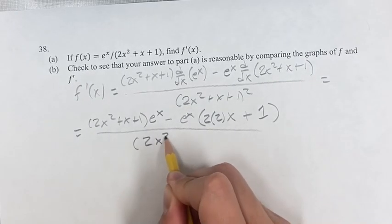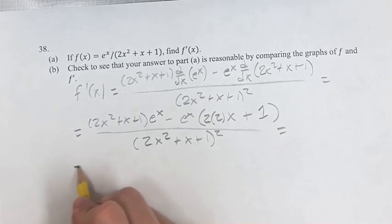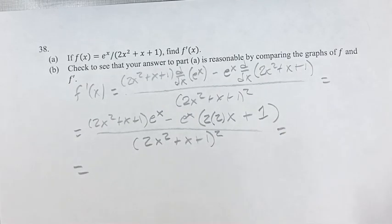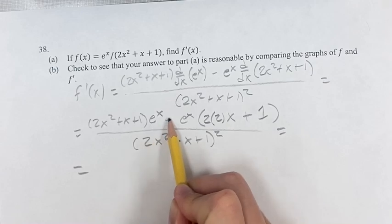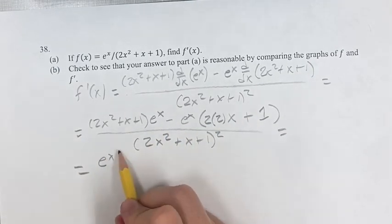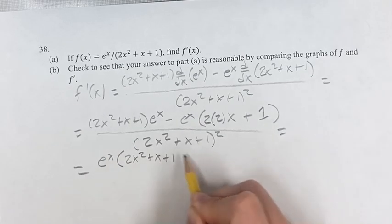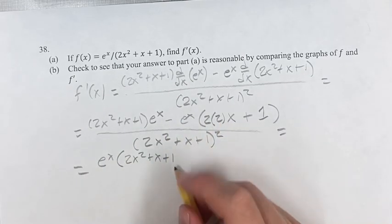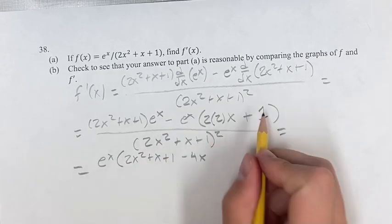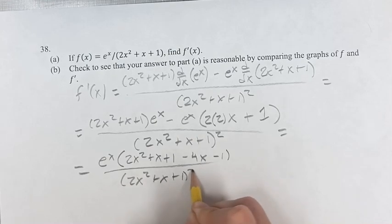So we don't even have to write it. 2x squared plus x plus 1 squared is still on the bottom. So we have this times e to the x minus this times e to the x. So we can factor by grouping and say e to the x times 2x squared plus x plus 1 minus 2 times 2 is 4x minus 1. This is over 2x squared plus x plus 1 squared.